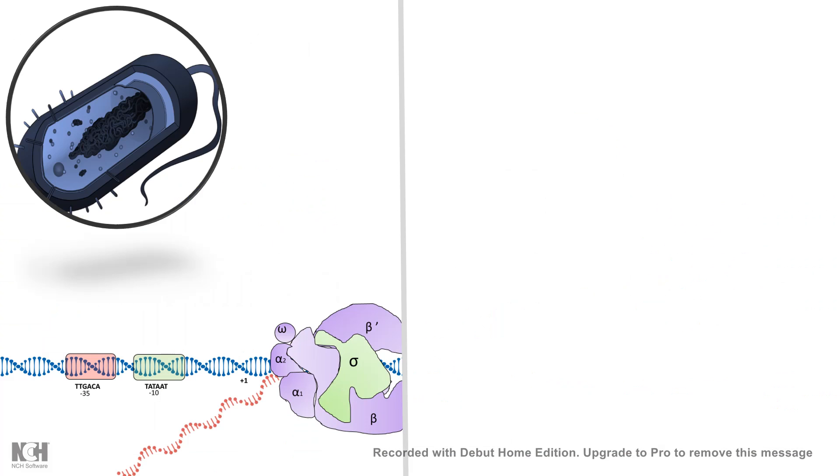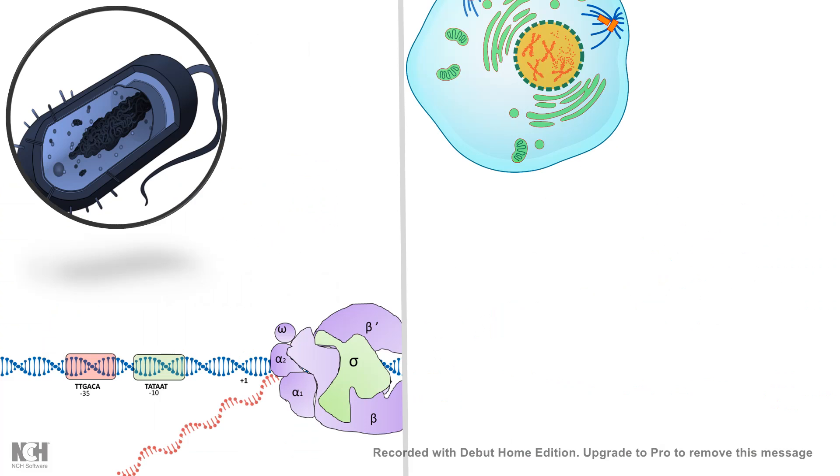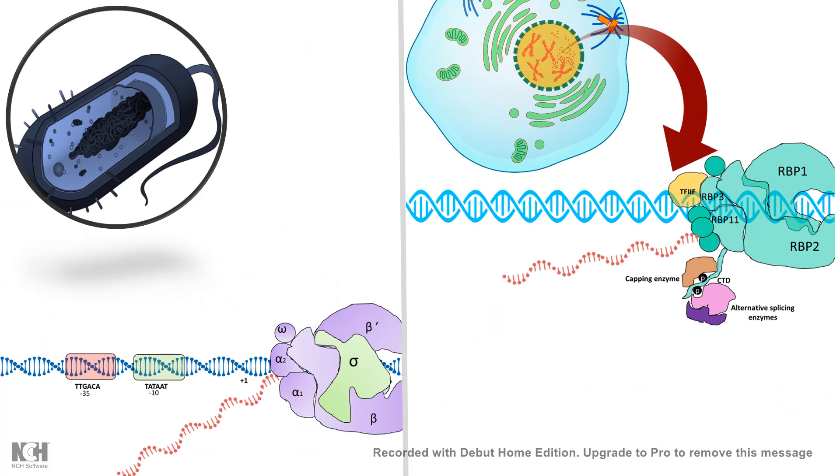In contrast to prokaryotic transcription, eukaryotic transcription is pretty different because in eukaryotes, while the mRNA is transcribed, at the same time there are several modification enzymes like splicing enzymes and capping enzymes which act upon the mRNA, leading to modification of the ends of the mRNA: a M7G cap and a polyA tail.